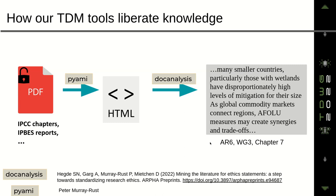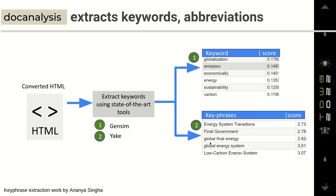We can then subject this HTML to certain kinds of analysis. For instance, we can look for keywords and we can also search for key phrases. And then we can score them according to a number of criteria.